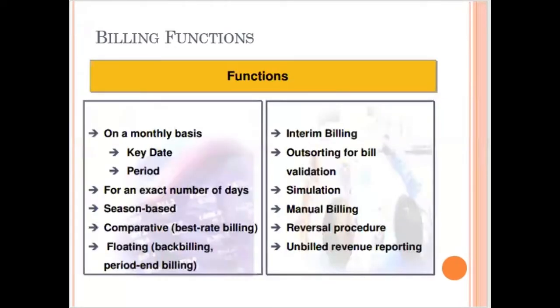If we discuss the minimum requirements to do billing — billing can be of any type. We mostly define billing into periodic billing and non-periodic or interim billing. Periodic billing is linked to a period or schedule, meaning every month you generate an invoice or bill. On a monthly basis, if you have a key date and a period, we call it periodic billing, and we have an exact number of dates.